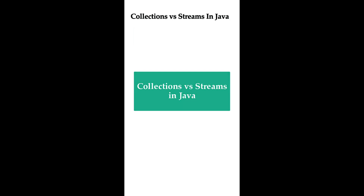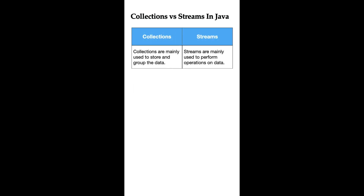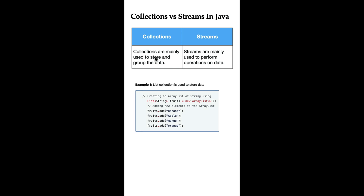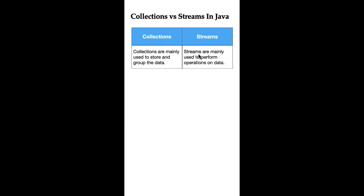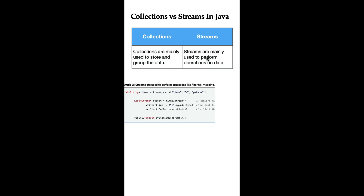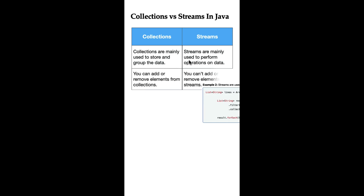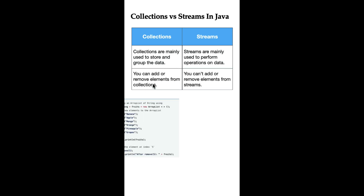What is the difference between Collections and Streams in Java? Collections are mainly used to store and group the data — for example, we can use List, Set, or Map to store and group data. On the other hand, Streams are mainly used to perform operations on data, such as filtering, matching, and mapping.